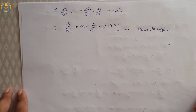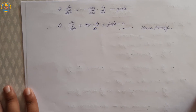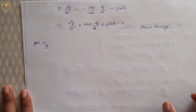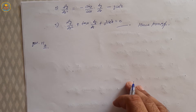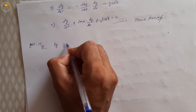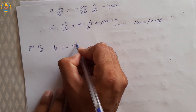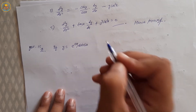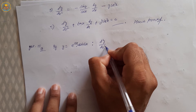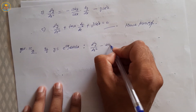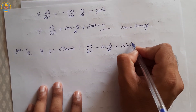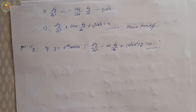Next question — question number 15, first part. If y = e^(ax) · sin(bx), then show that d²y/dx² − 2a · dy/dx + (a² + b²) · y = 0.